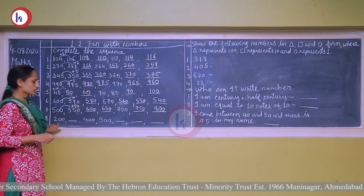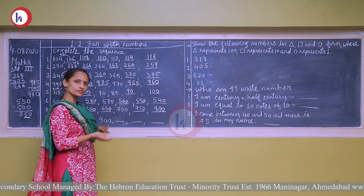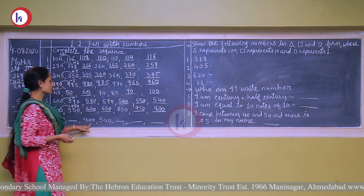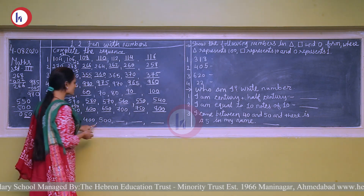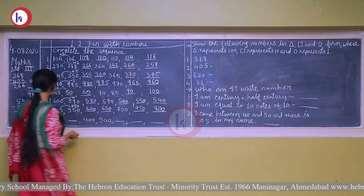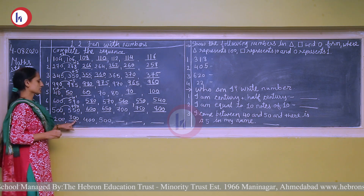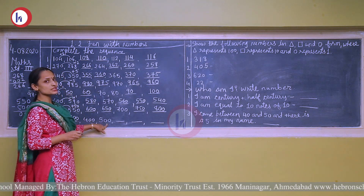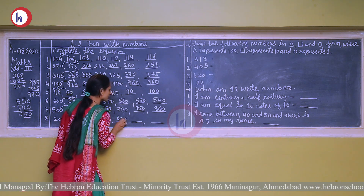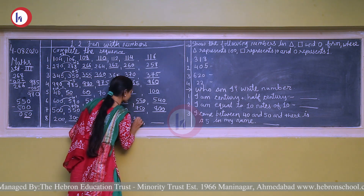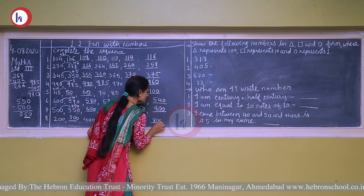Next: 200, 400, 500. Again numbers are increasing, so it is a forward counting. Looking at 400 and 500, the difference is 100. So we add 100 each time. 200 plus 100 is 300. 300 plus 100 is 400. 400 plus 100 is 500. 500 plus 100 is 600. 600 plus 100 is 700. Again add 100, we get 800.